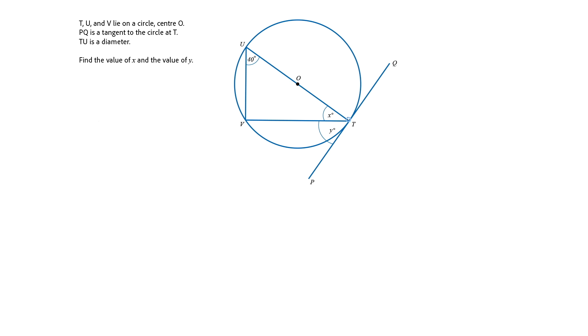And the first circle theorem has to do with triangle T, U, V. T, U is a diameter, and V is a point on the circumference. So this triangle here will always be a right angled triangle. This angle here is a right angle. So whenever you get a diameter and a point on the circumference, then this angle here is always a right angle.